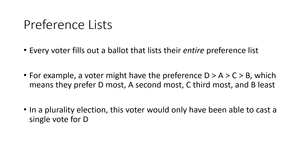The way this is going to work is that every voter is going to fill out a ballot that lists their entire preference list: first choice candidate, second choice candidate, third choice candidate, and so on. We write the candidates in that order separated by greater than signs. So when we write D > A > C > B, it means D is this voter's first choice, A is second, C is third, and B is fourth. In a plurality election, all this voter could do is cast a single vote for D — they would not be able to express their relative preferences for candidates A, B, and C.